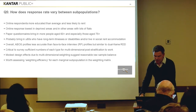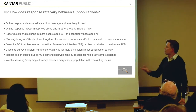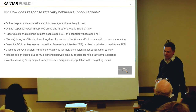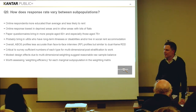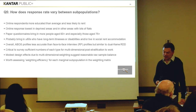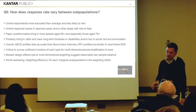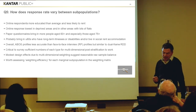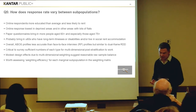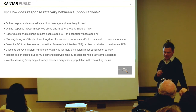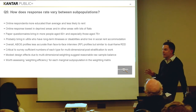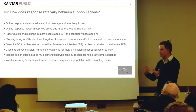How does response rate vary between subpopulations? We've done lots of these surveys and they are all slightly different, but a couple of things clearly come through. Online respondents are more educated than average — the percentage with degrees will be eight or nine percentage points higher than the population. They are much less likely to rent. Online response rates are lower in deprived areas, and also lower in areas with lots of flats that aren't necessarily deprived. Paper questionnaires tend to bring in more people aged 60 plus, and especially those aged 75 plus who are not particularly well represented in the ABOS samples. They probably also bring in under-60s who have long-term illnesses or disabilities and/or live in social rented accommodation.